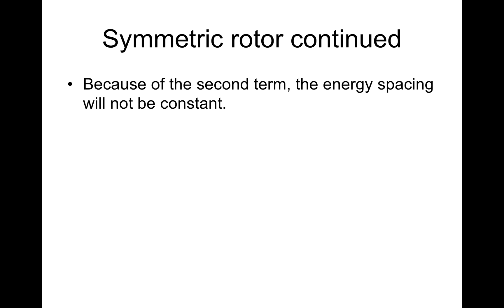Symmetric rotor continued. Because of the second term, the energy spacing will not be constant. What are the selection rules? In this case, ΔJ is still ±1. In addition, ΔK equals 0.